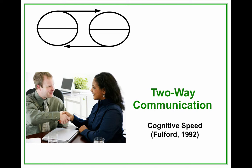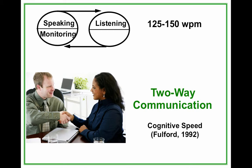What I discovered is that we have enough room in our brain to both speak and listen to another person in a two-way communication at about 125 to 150 words per minute. That's the rate at which we speak and listen. However, there's some remaining space in our brain to both monitor — to make sure we don't say anything silly — as well as to prepare our response, again at 125 to 150 words per minute.